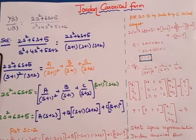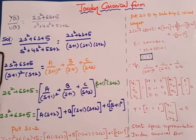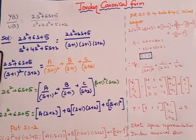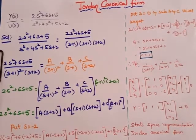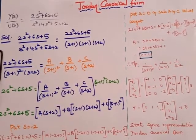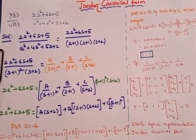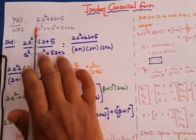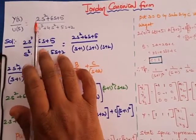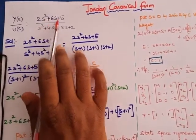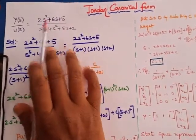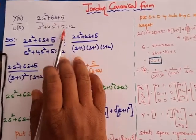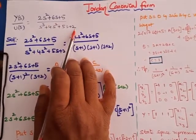Welcome to Electric Fund. In today's class we are going to discuss Jordan canonical form and its state space representation. The given question is y(s)/u(s) equals 2s squared plus 6s plus 5, divided by s cubed plus 4s squared plus 5s plus 2.